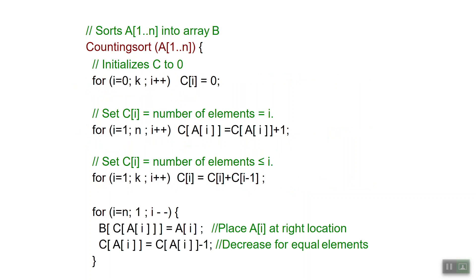Here is the pseudocode for counting sort. The input to counting sort is an array A from 1 to n and the output will be put into an output array B. Counting sort uses an auxiliary array C which we initially initialize to 0. That's the purpose of the first for loop.